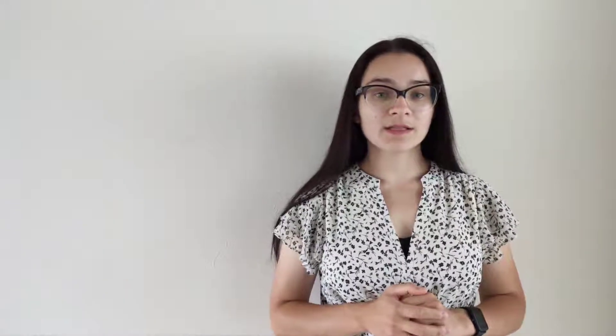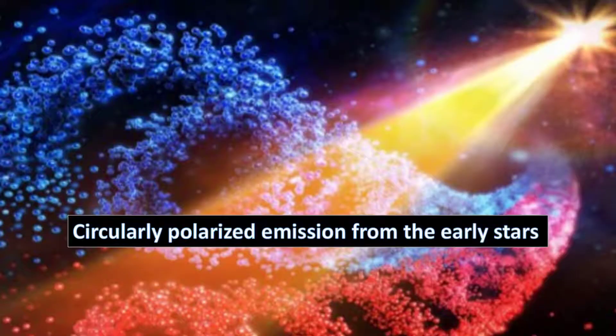Indeed, astrophysicists discovered that the emission from the early stars was circularly polarized. There are numerous varieties of nanoparticles in interstellar space, which could absorb this light and become chiral, and then transfer the chirality to biomolecules via some mechanisms.